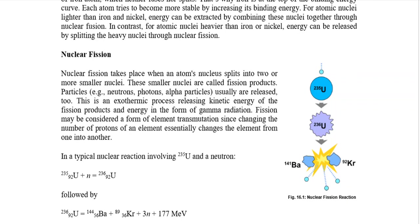Fission is considered a form of element transmutation — the process when one element is actually transformed into another. Since changing the number of protons essentially changes the element type, when a fission reaction splits an element it is actually transmuted from one element into another element.